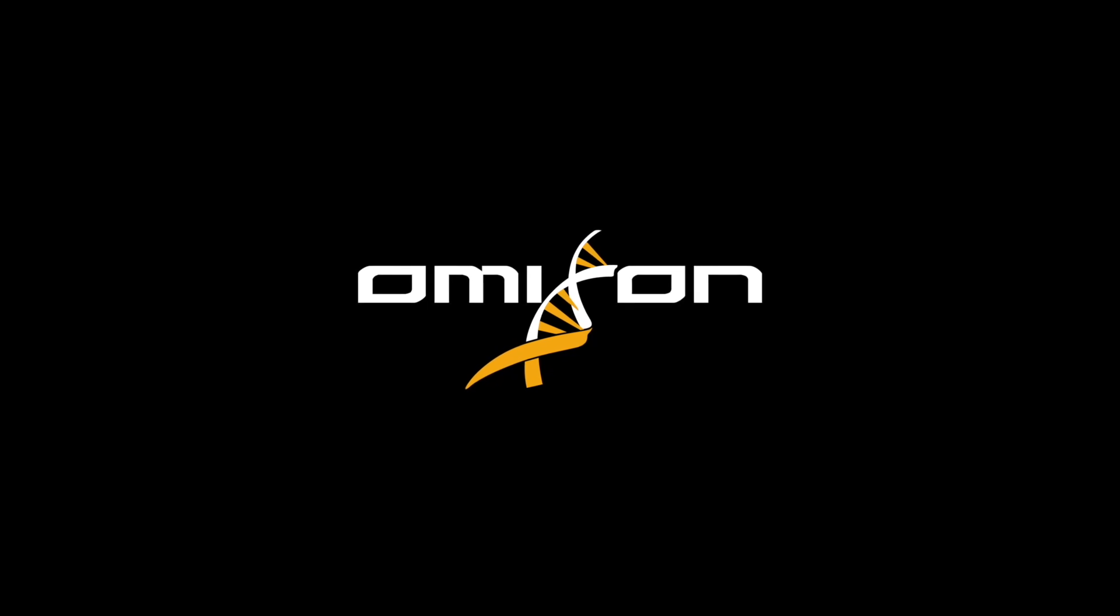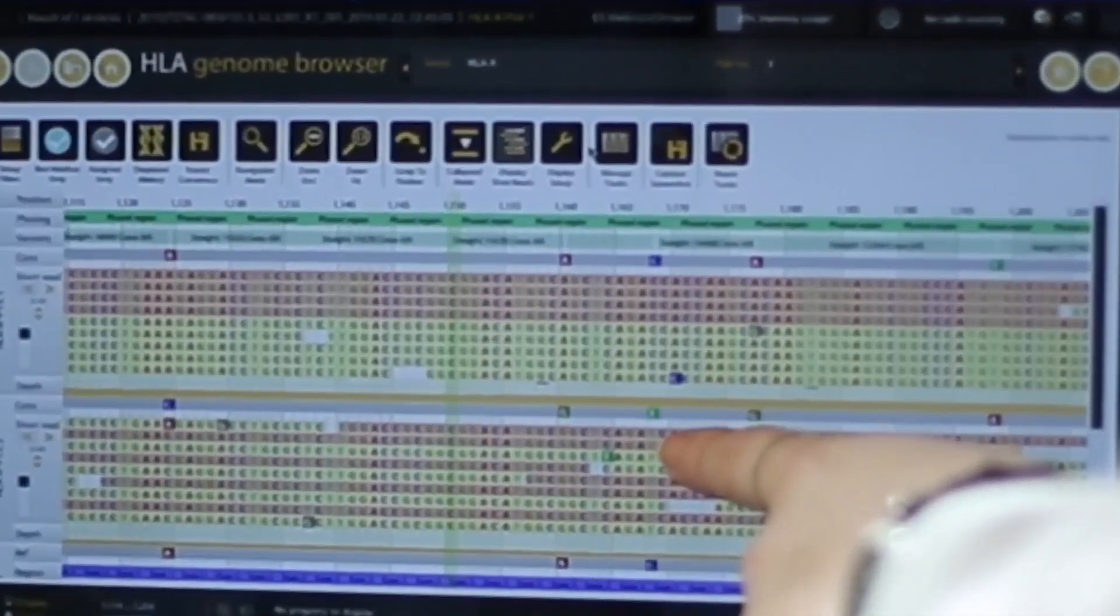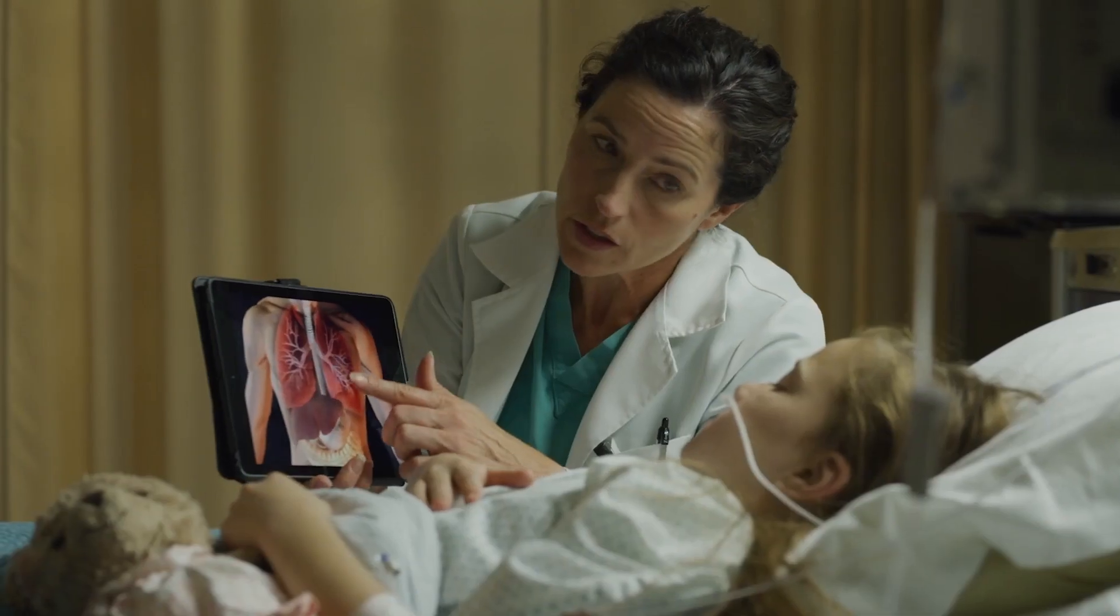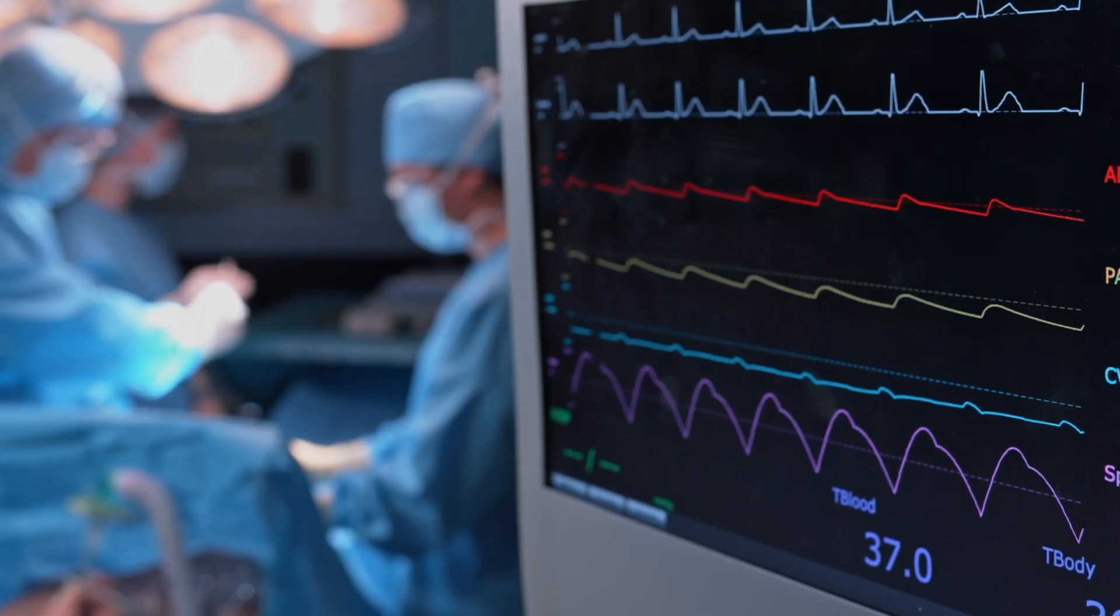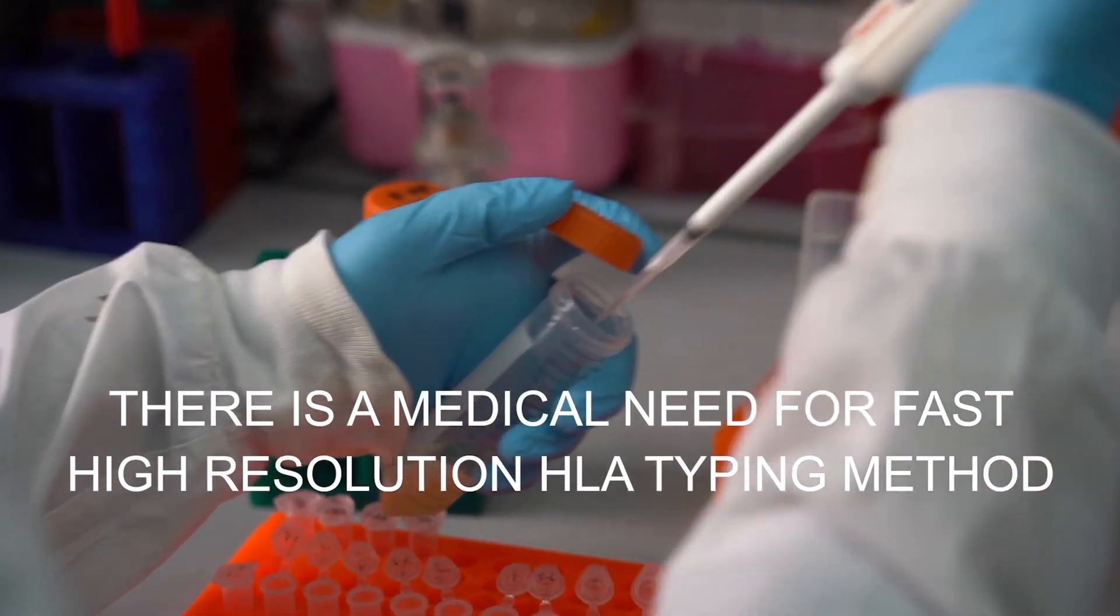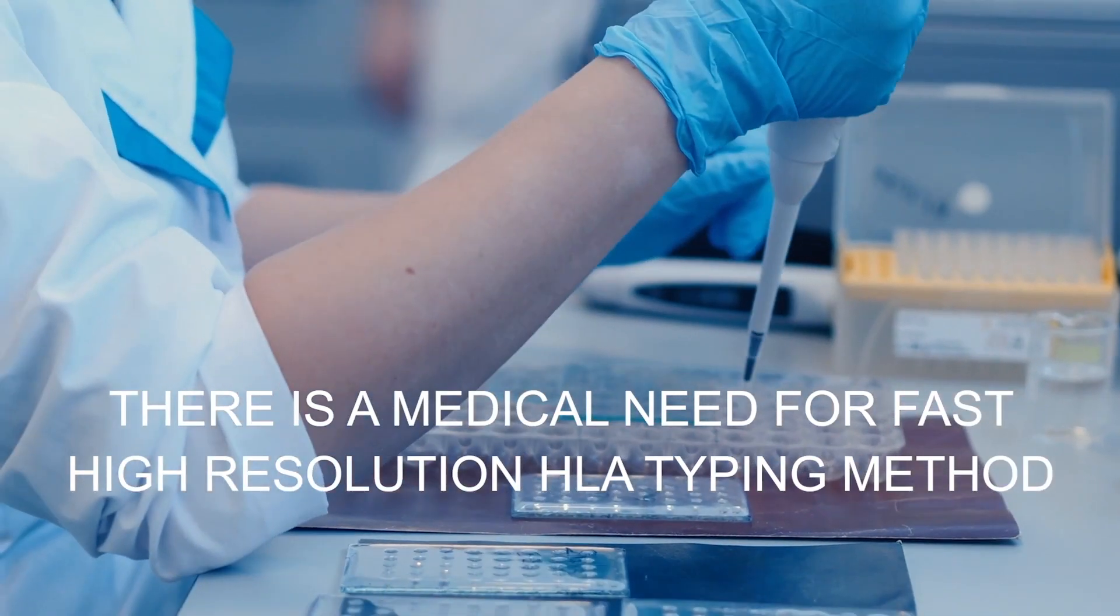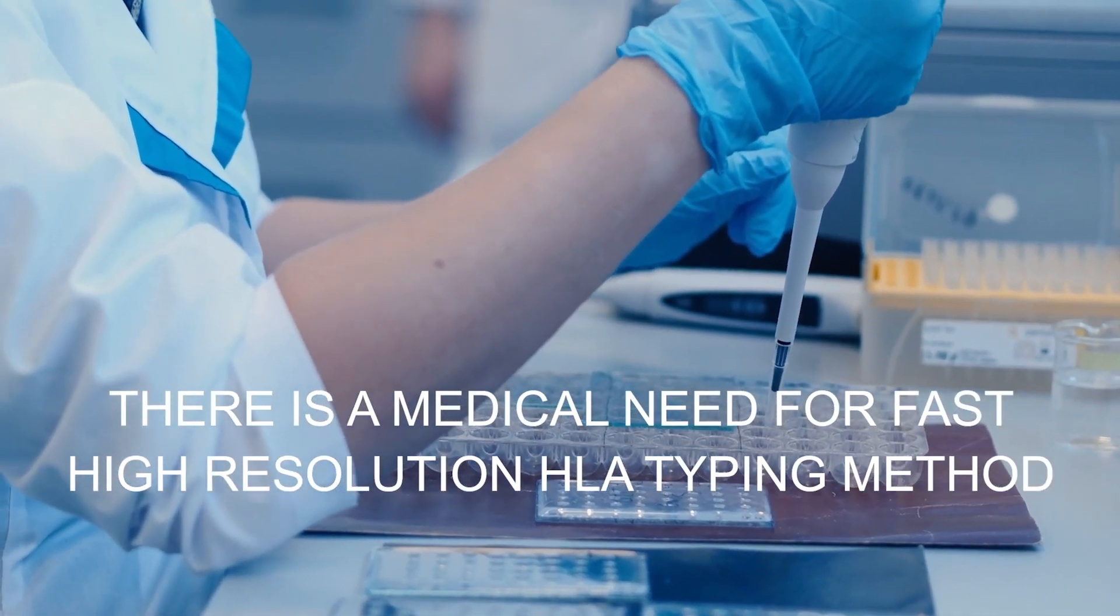Omixon had the first successful commercial NGS-based HLA typing kit and software in 2014. Sensitized patients could in the future receive suitable organs faster if deceased donors were typed with high-resolution HLA typing methods, which unfortunately does not exist today.